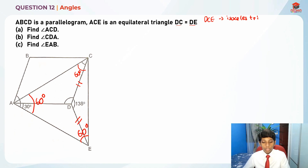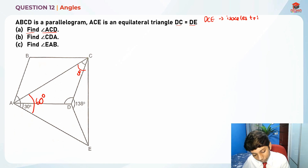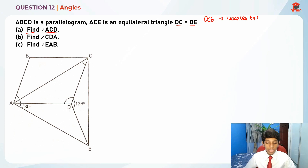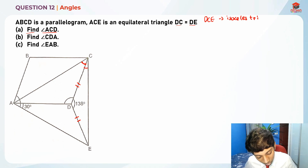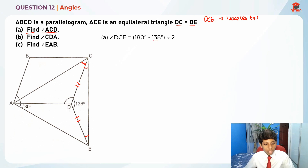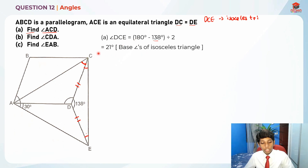Let's read Part A — they are asking us to find angle ACD. Angle ACD is this angle over here. Since triangle DCE is an isosceles triangle, we can find the base angles. Angle DCE equals 180 degrees minus 138 degrees, which gives us the sum of the two base angles, and then we divide by 2 to get 21 degrees. So 21 degrees is the base angle.